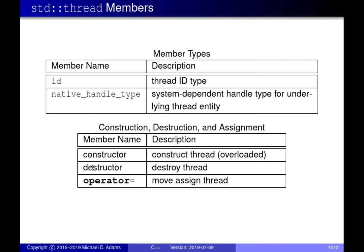The important thing to remember about the destructor is it's an error if you try to destroy a thread object that's still joinable - in other words, you haven't actually performed a join operation on it. In terms of assignment, the type is only movable, so there is no copy assignment operation - only move assignment.